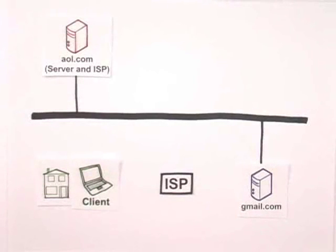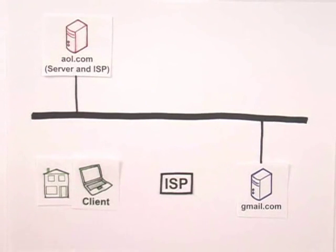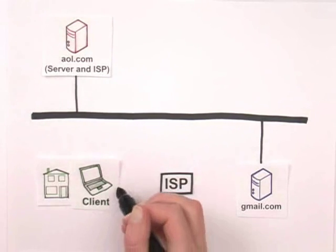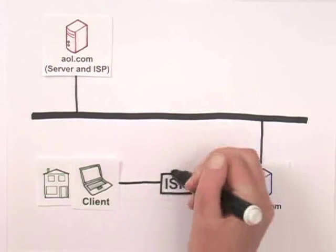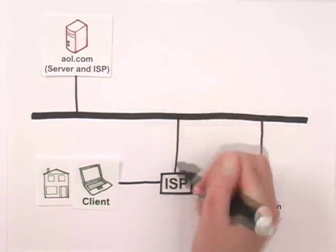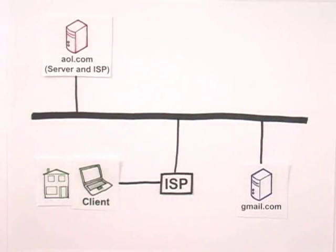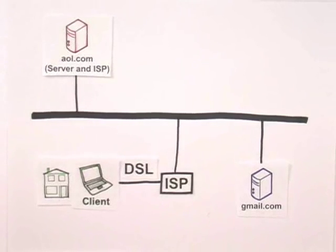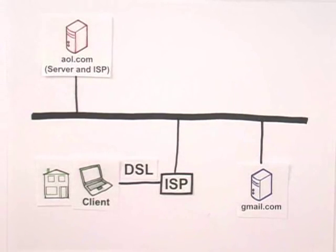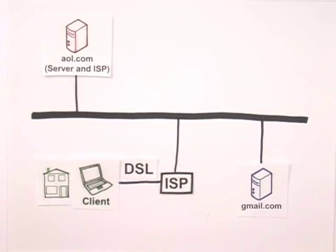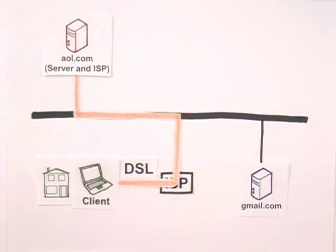So, this is how it works. Your computer at home is not a server, because it's not connected directly to the Internet. Computers you and I use every day are called clients, because they're connected indirectly to the Internet through an Internet service provider. Here we'll pretend that this is my home laptop, and I'm using DSL. Now let's pretend that I want to visit AOL.com, which is, coincidentally, both a server and an ISP. I hop onto my laptop with DSL, go through my ISP, onto the Internet, and look at AOL.com.